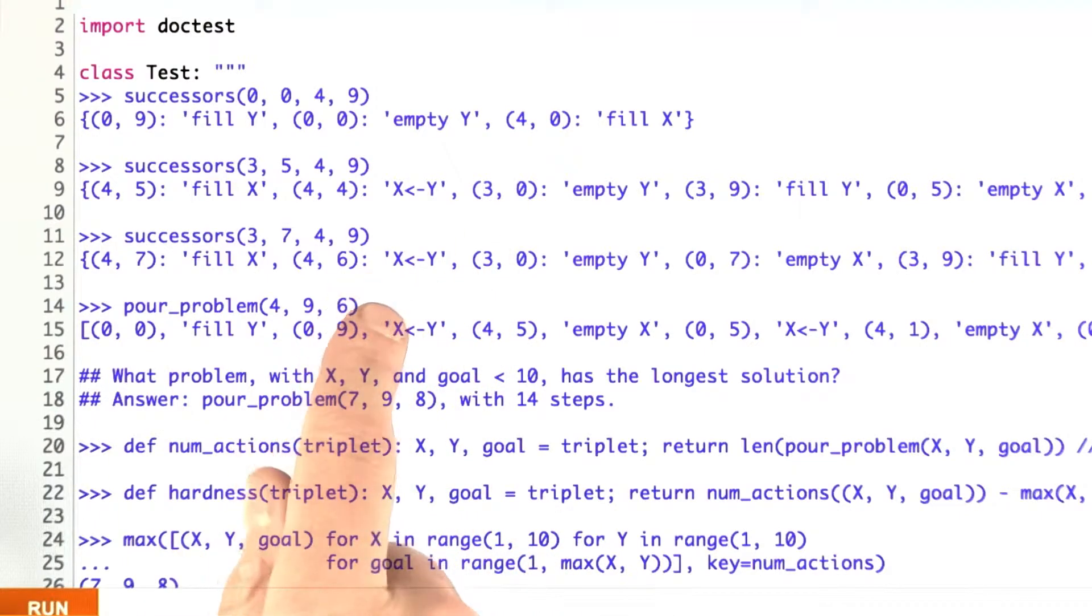In general, there are six actions, but here a lot of them end up being the same because if you pour 0 into 0 either way or if you empty out either of them, it all comes out the same. We only end up with three states, and they happen to have these labels, 0, 9 filling y, 0, 0.